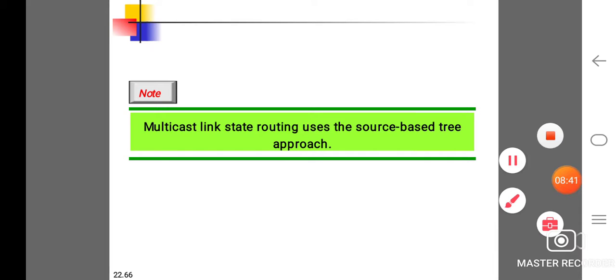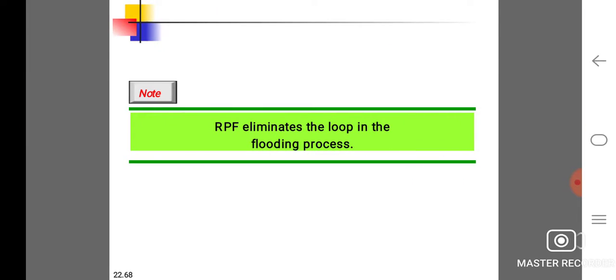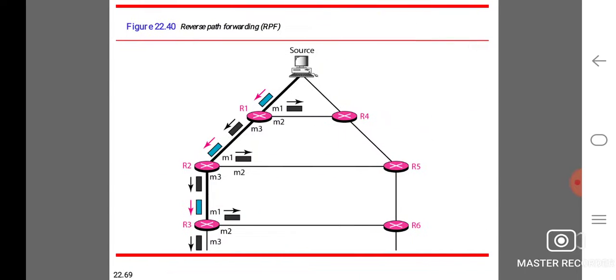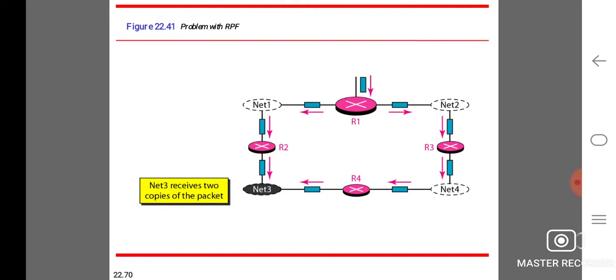Multicast link state routing uses the source-based tree approach. Flooding broadcast packets creates loops in the system. RPF eliminates the loop in the flooding process. This is RPF, but consider the problem with RPF.